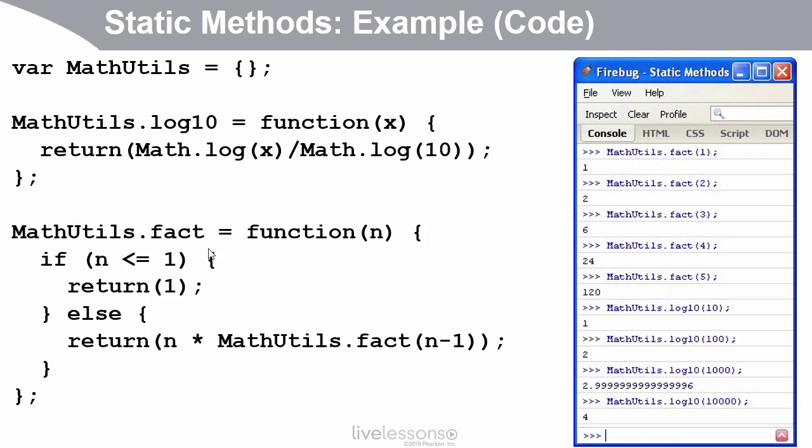So if you've never seen recursive programming before, it's a little hard to grasp from this quick example. But the point is that if I'm going to call my name MathUtils.fact, then I have to be consistent. Even in my recursive call, I call it MathUtils.fact.